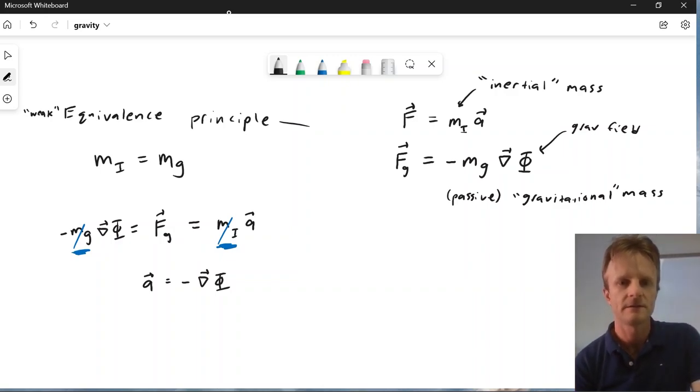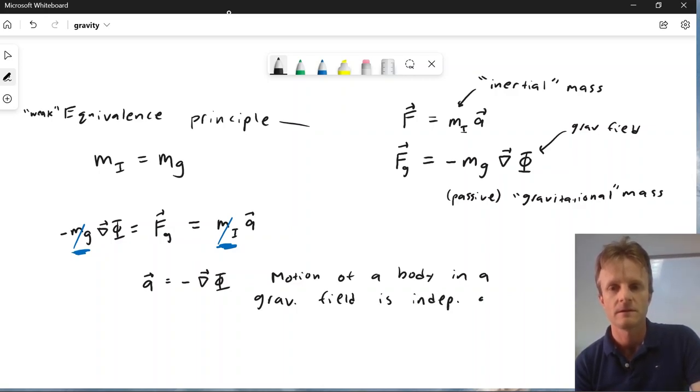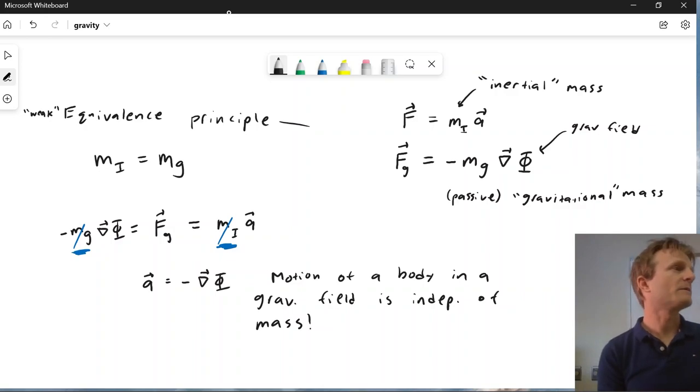And so what this means is the motion of a body in a gravitational field is independent of the mass. In fact, there's nothing in this equation about the body at all.